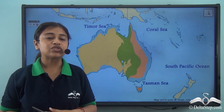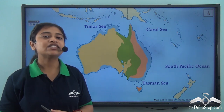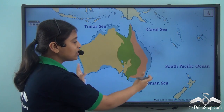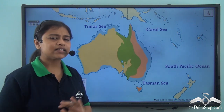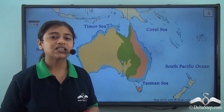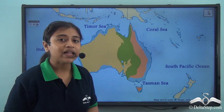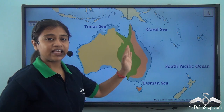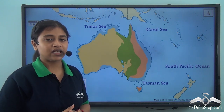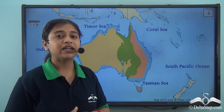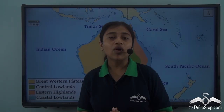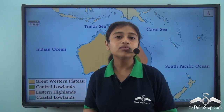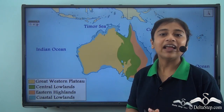That was a clear look at the third major physical division of Australia — the Eastern Highlands. Now we come to another important major physical division: the coastal lowlands. The coastal lowlands are a narrow stretch of plain along the coast of the continent in the eastern, western and southern portions. These coastal lowlands play a very important role as they provide grounds for trade and commerce and are also home to unique animals and vegetation.